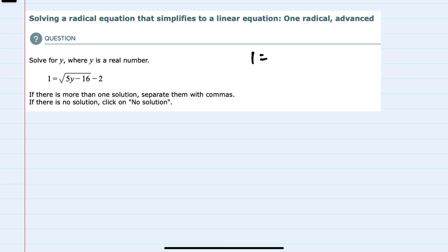We're solving for y, and y is inside of a radical, so I'll first isolate the radical by adding the 2 over to the left-hand side, moving it from the right to now be 3 equals the square root of 5y minus 16.